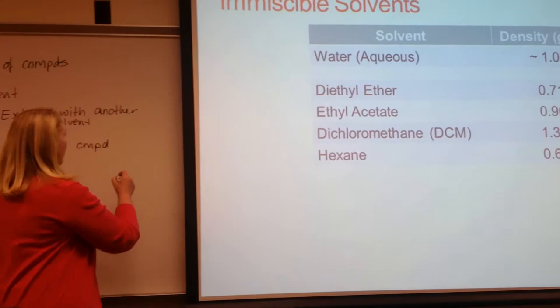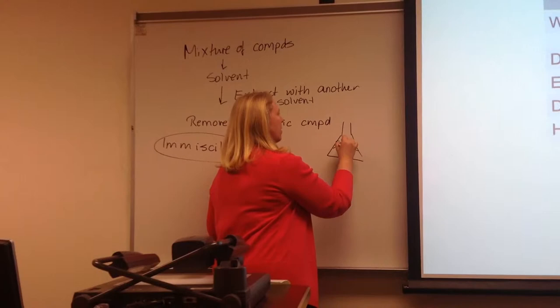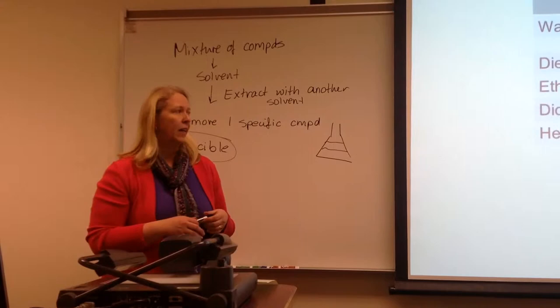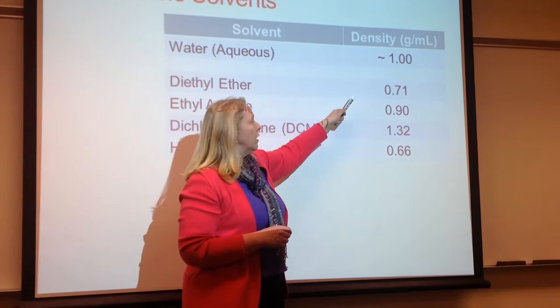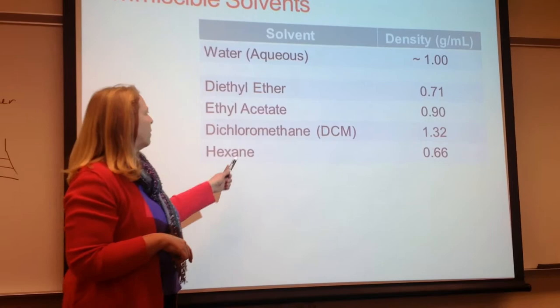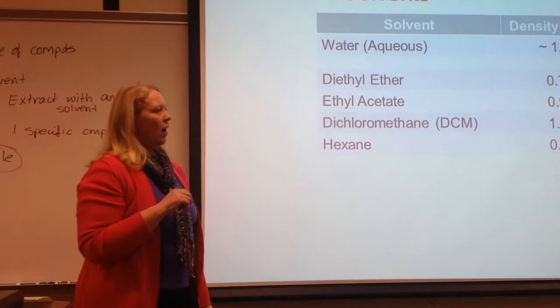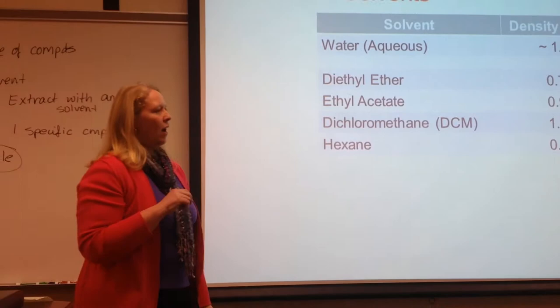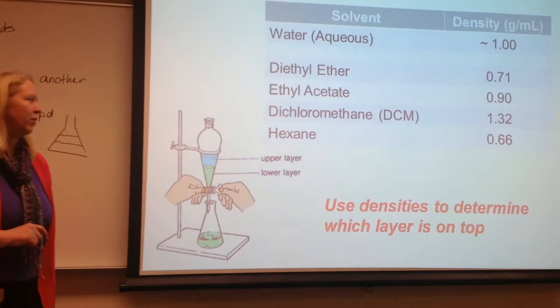When you have two liquids in your flask that are immiscible, you're going to form two layers. For our experiment, it's important to keep track of which layer is the aqueous layer and which one is the organic layer — that's where knowing the densities comes in handy. Water's density is about one gram per milliliter. Most organic solvents are less dense than water, so they're going to be on top. The only exception is chlorinated solvents such as chloroform and dichloromethane — they're more dense than water and will be the bottom layer. It's very important that you keep track of that, especially when you switch solvents and your layers might switch.